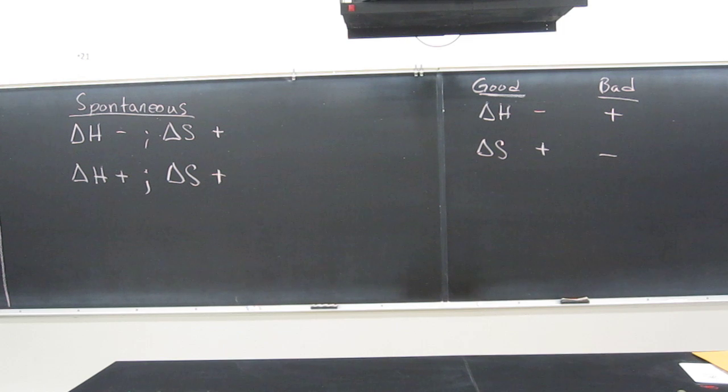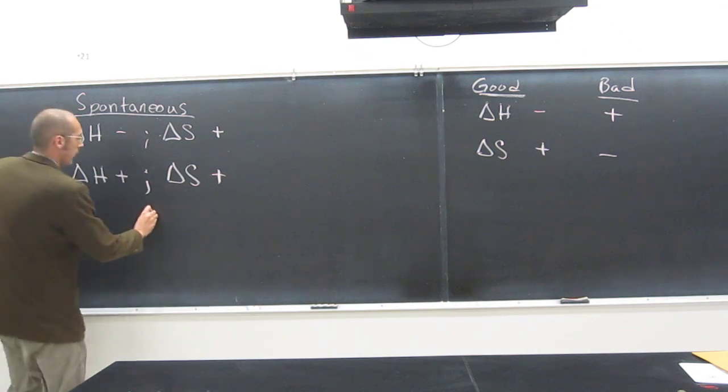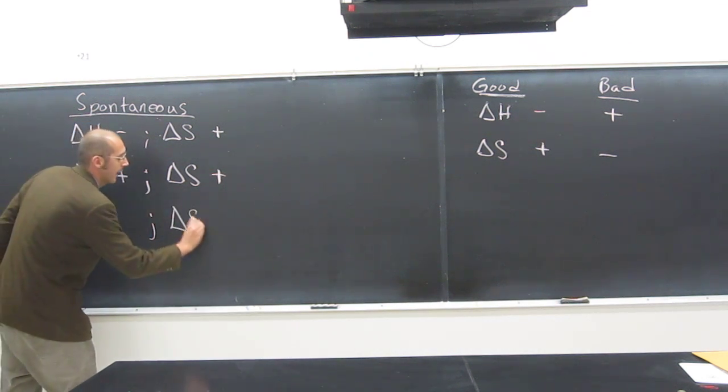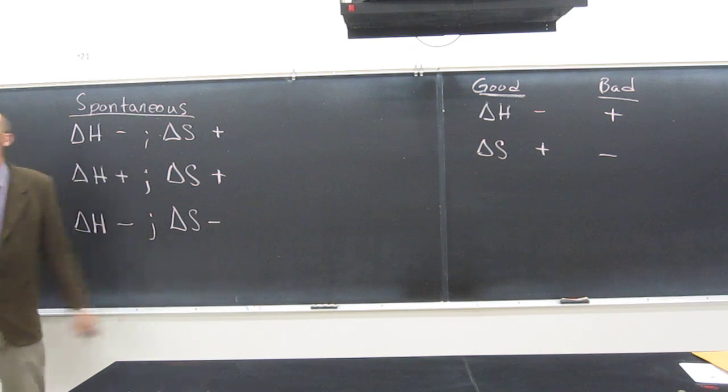Okay, what about a process that causes an entropy decrease? What does that mean? Delta S is negative. So when will that process be spontaneous? When delta H is negative, but it's got to be more negative than the delta S. Is everybody cool with that?